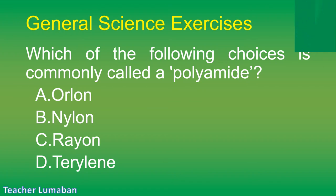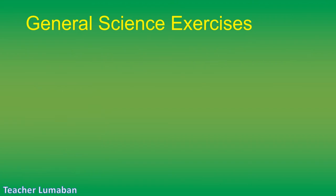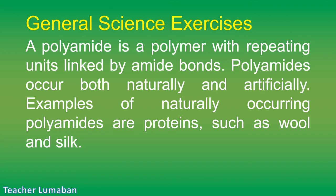The correct answer is Letter B: Nylon. A polyamide is a polymer with repeating units linked by amide bonds. Polyamides occur both naturally and artificially. Examples of naturally occurring polyamides are proteins, such as wool and silk.